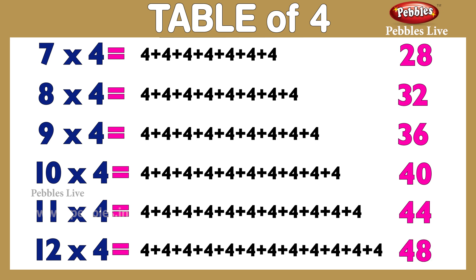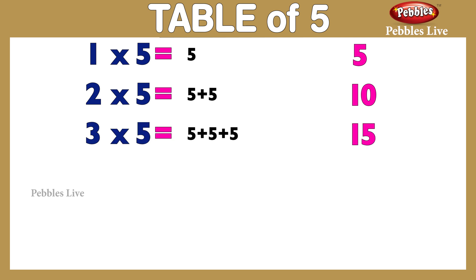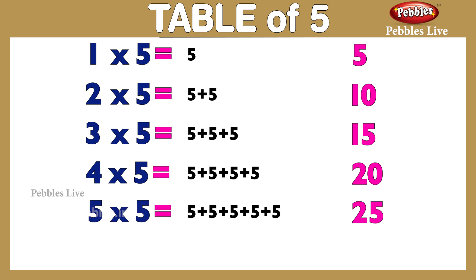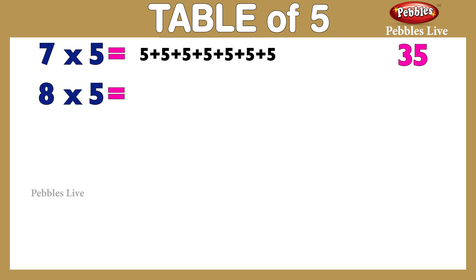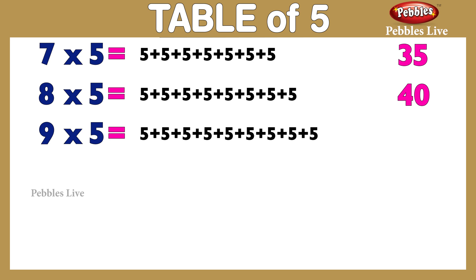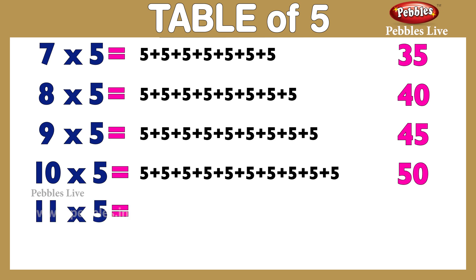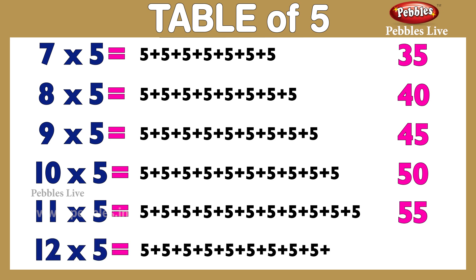Table of 5: 1 five is 5, 2 fives are 10, 3 fives are 15, 4 fives are 20, 5 fives are 25, 6 fives are 30, 7 fives are 35, 8 fives are 40, 9 fives are 45, 10 fives are 50, 11 fives are 55, 12 fives are 60.